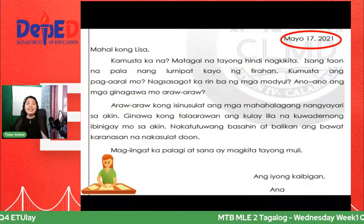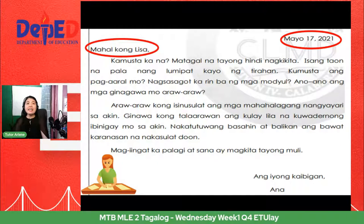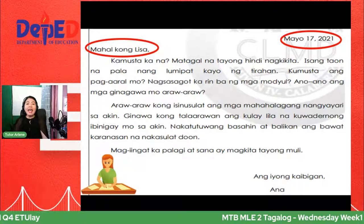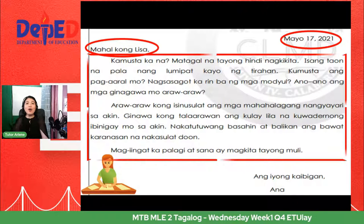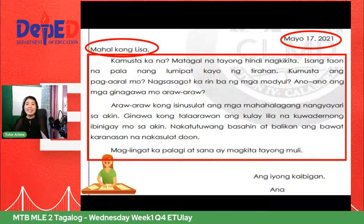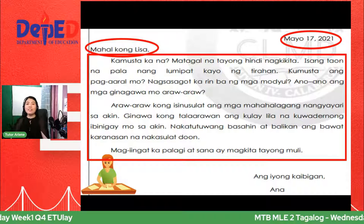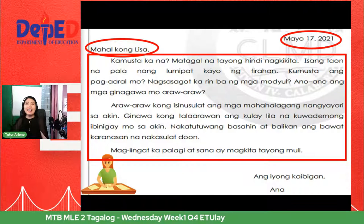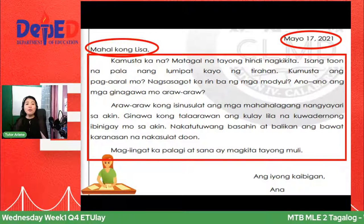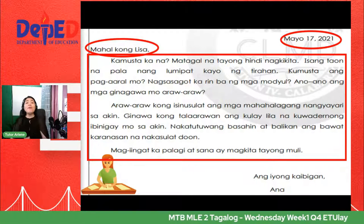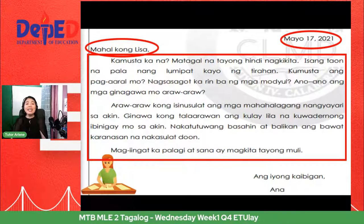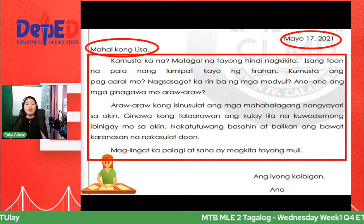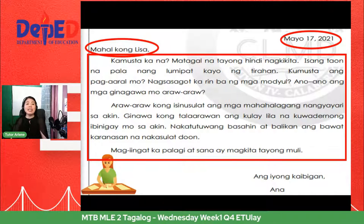Paano inumpisahan ni Ana ang kanyang liham? Inumpisahan niya ito sa pamamagitan ng pagbati — ang sabi niya ay 'Mahal kong Lisa.' Ano-ano ang sinabi ni Ana kay Lisa? Kinumusta niya si Lisa, sinabi niyang naka isang taon na pala mula nung lumipat ng kanilang tahanan, kinumusta kung ano ang ginagawa niya araw-araw, at naikwento rin niya na gumagawa siya ng talaarawan gamit ang lila na notebook o kwaderno na ibinigay ni Lisa sa kanya.